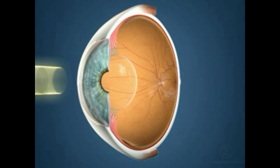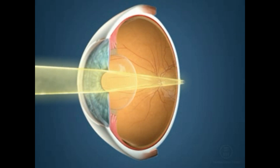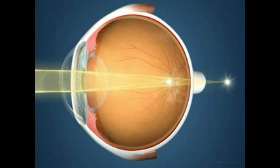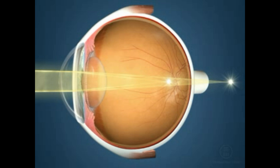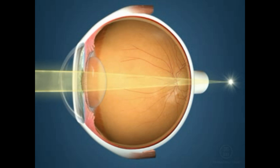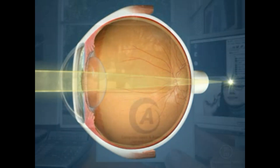Astigmatism is a refractive error in which light rays entering the eye do not focus onto a single point needed for clear vision. Instead, light focuses on two distinct points, neither of which may be on the retina. Where these images focus depends on whether the astigmatism is associated with myopia or hyperopia. Astigmatism causes a distortion or blurring of images at all distances, nearby as well as distant.